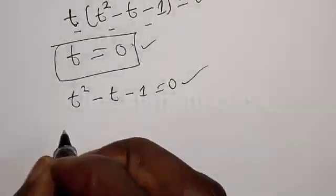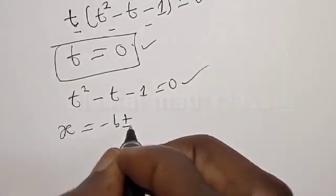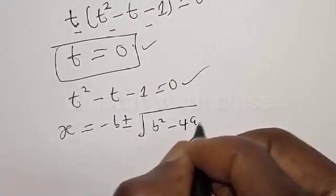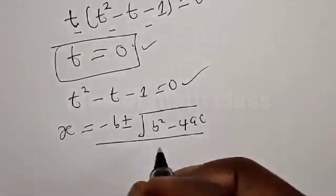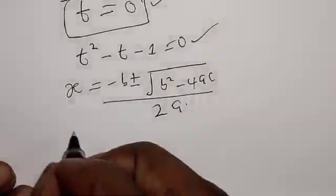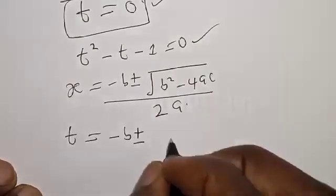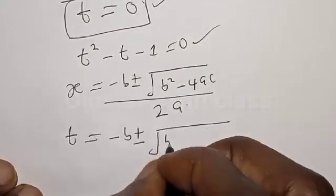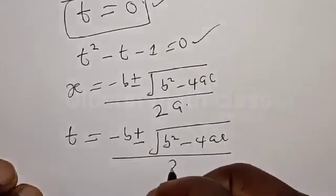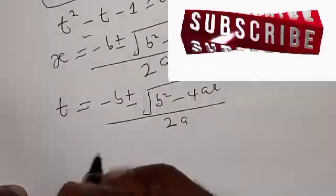The quadratic formula gives t equal to negative b plus or minus the square root of b squared minus 4ac, over 2a. From our equation t squared minus t minus 1 equals zero, we identify a equals 1, b equals negative 1, and c equals negative 1.